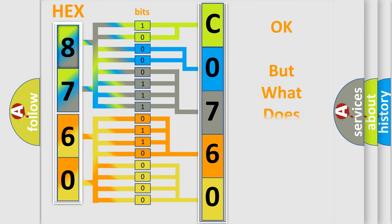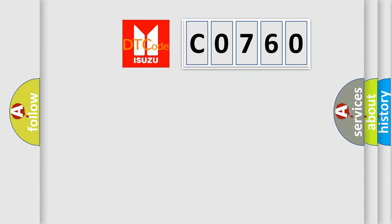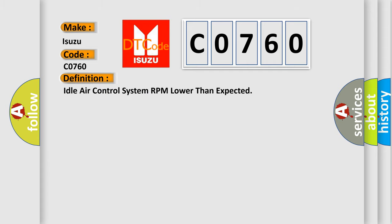We now know in what way the diagnostic tool translates the received information into a more comprehensible format. The number itself does not make sense to us if we cannot assign information about what it actually expresses. So, what does the Diagnostic Trouble Code C0760 interpret specifically? It applies to Isuzu car manufacturers.